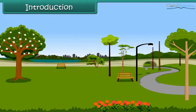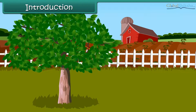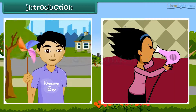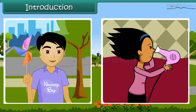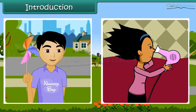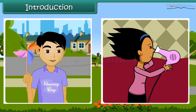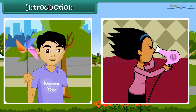Dear friends, do you have any idea as to how a kite flies? How do the leaves of a tree move? Or have you ever played with a paper windmill? How does this happen? Friends, this happens due to the movement of air. Air is present everywhere around us and we can feel it.